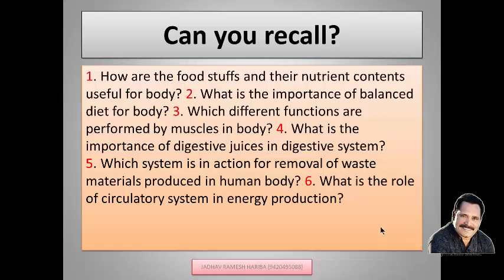The system in action for the removal of waste material produced in our body is the excretory system, which helps to remove unwanted waste in the form of urine and in various other forms. The circulatory system plays a role in energy production — as we eat food which gets digested, the digested food is supplied to each and every cell. The circulatory system helps supply glucose, fatty acids, and amino acids to every cell, while energy is produced by the process of respiration.